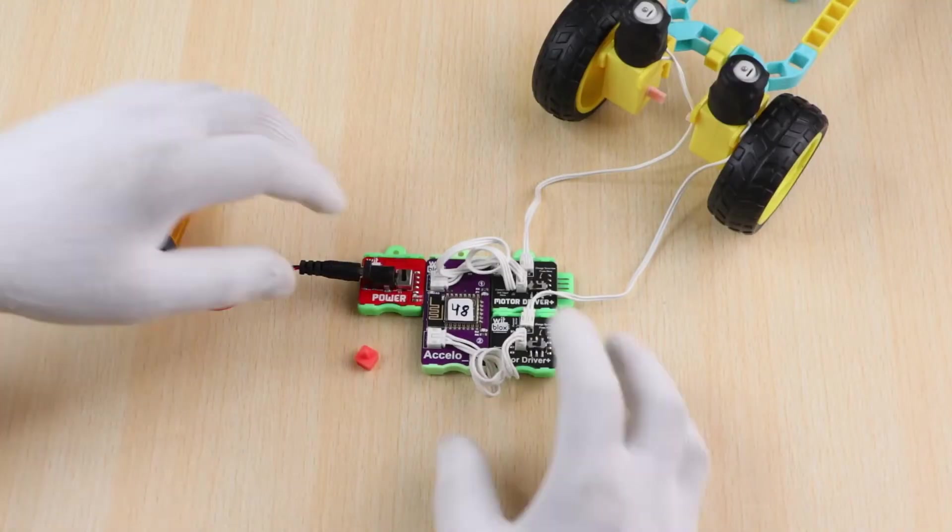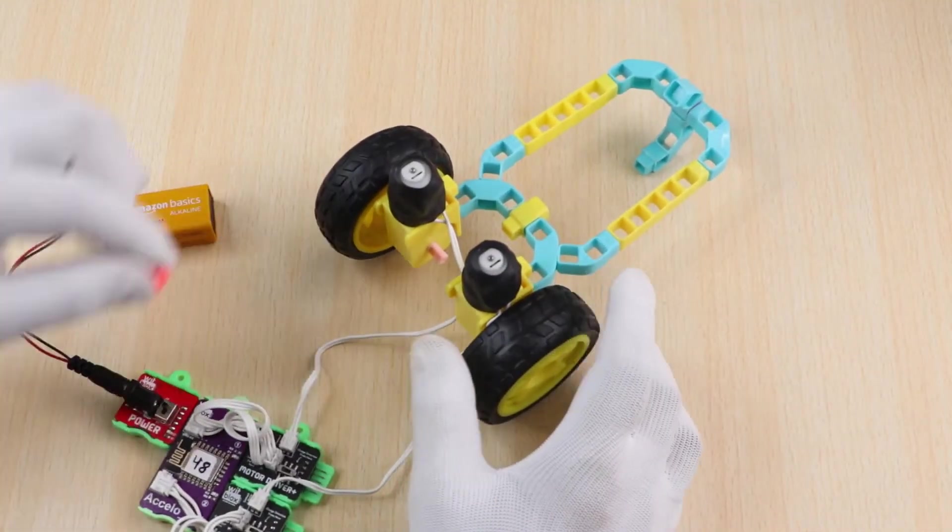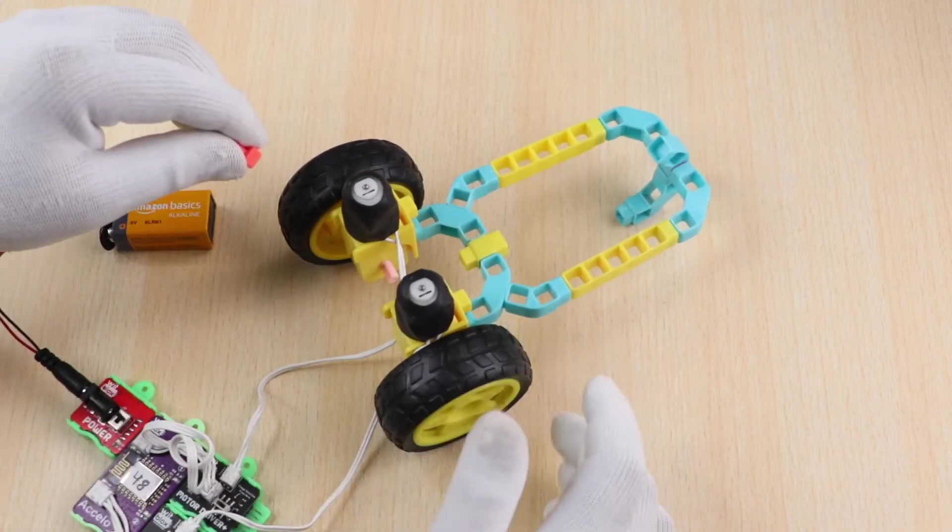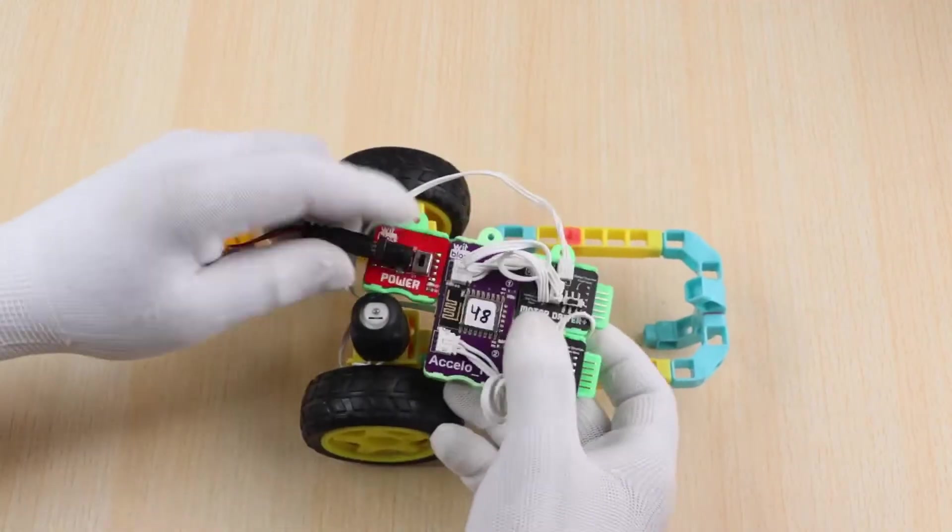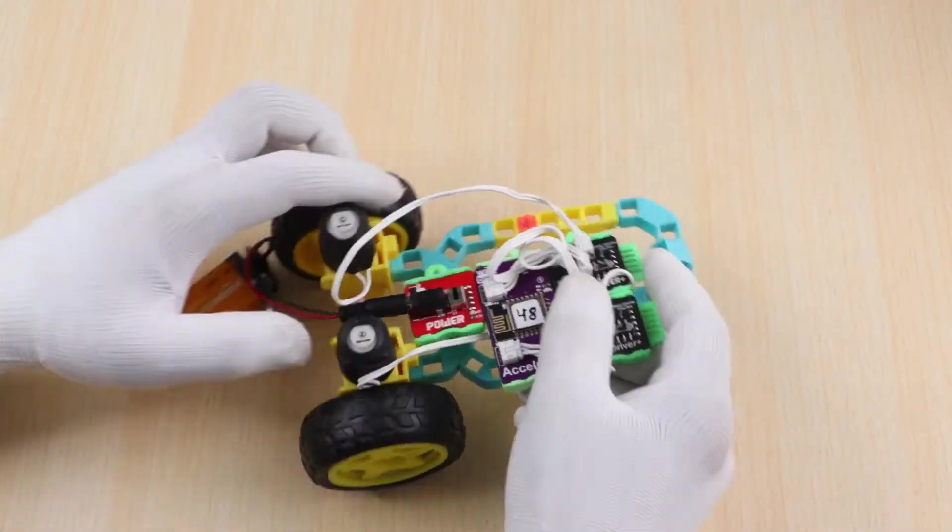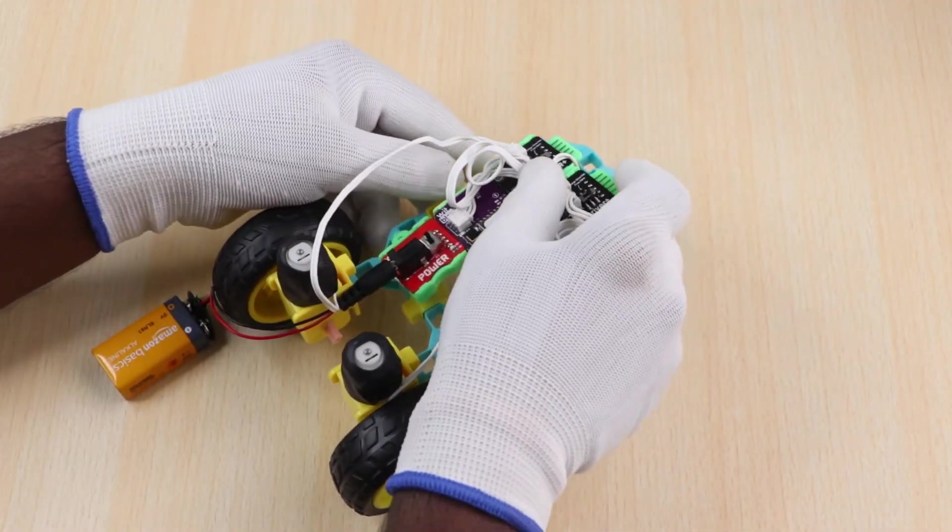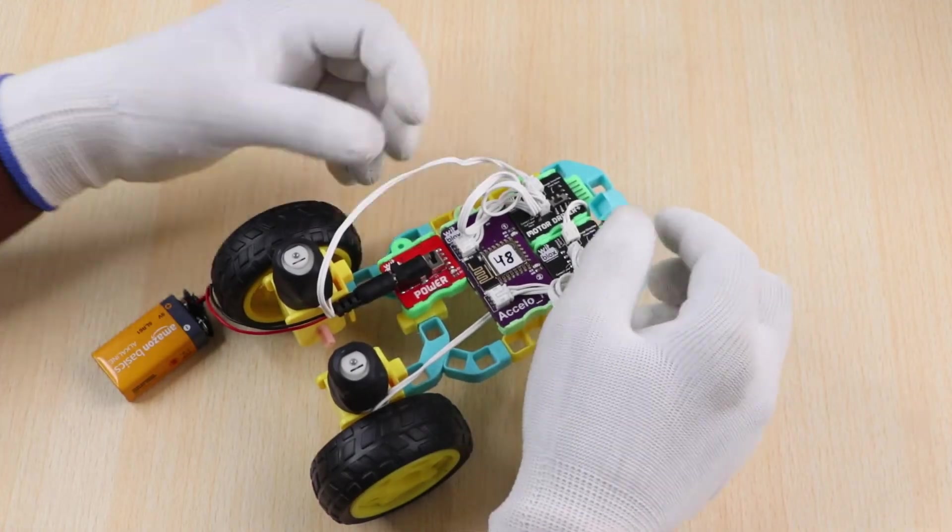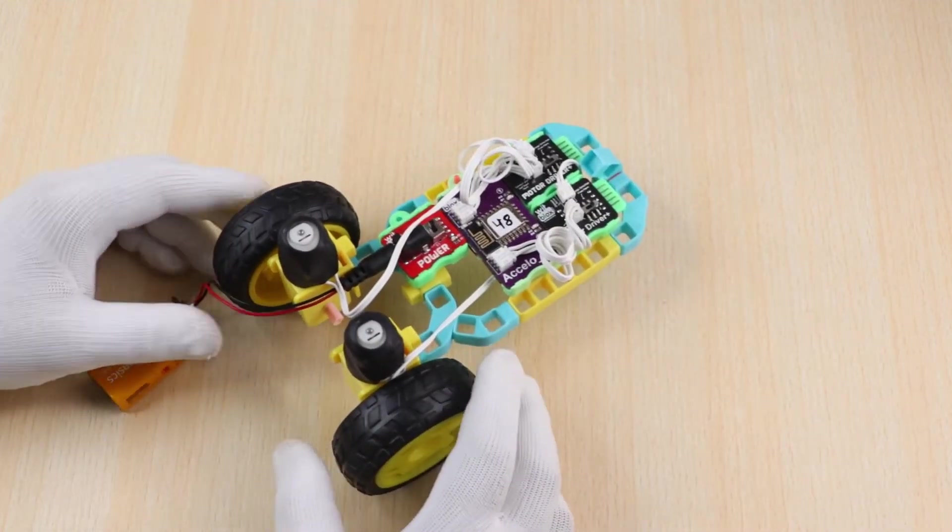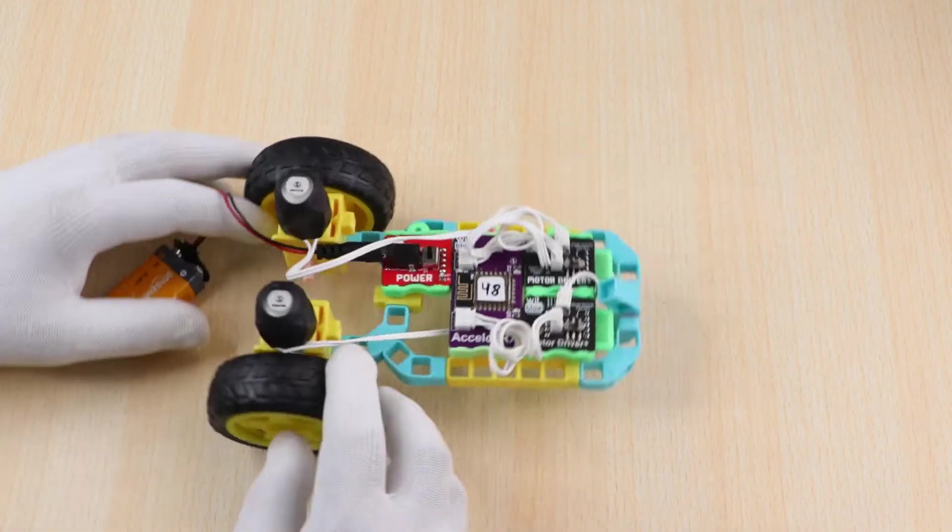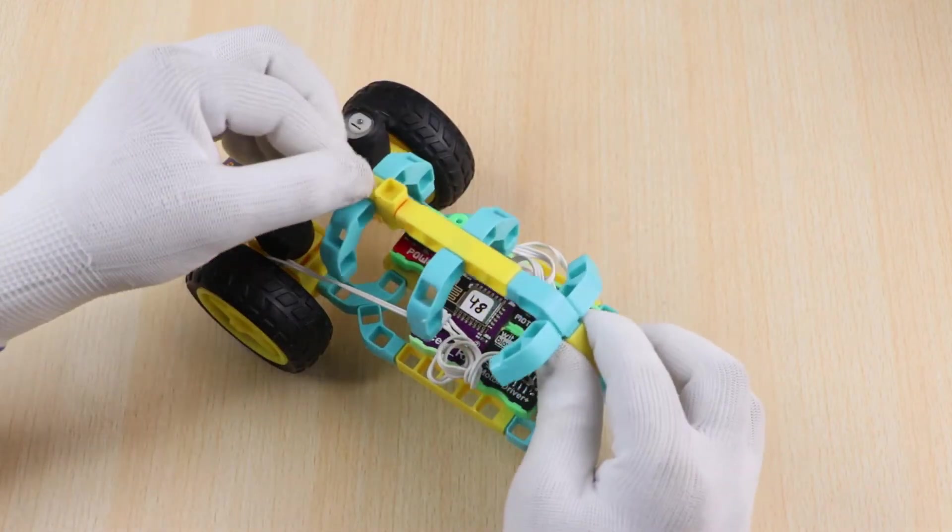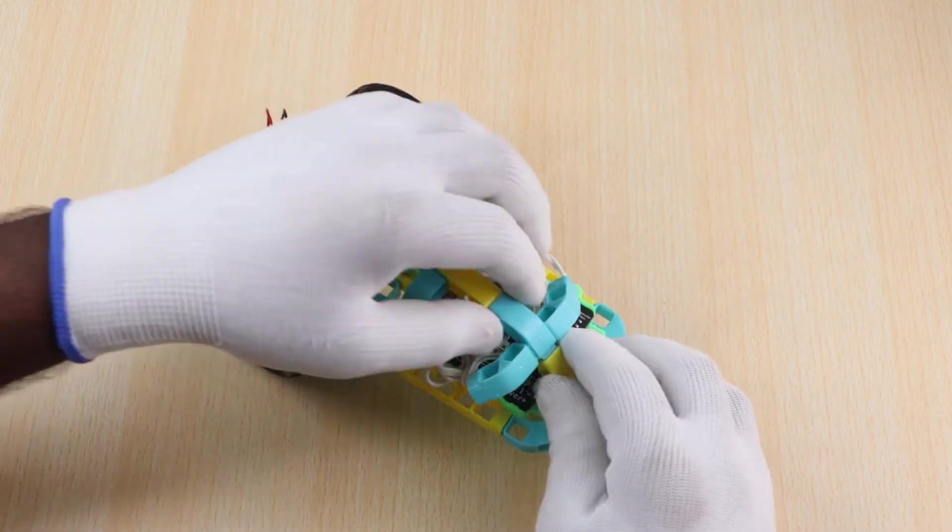Finally, take a blocks holder and attach it to the structure and let's join the blocks to our structure. Then take the previous structure and join it on top of the blocks.